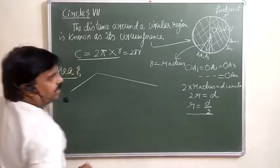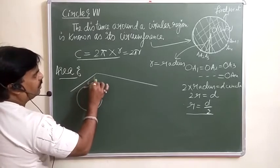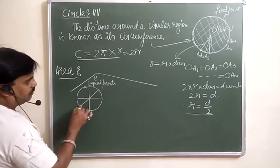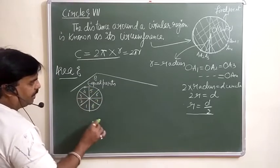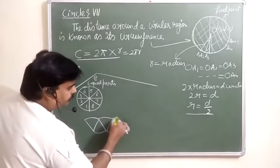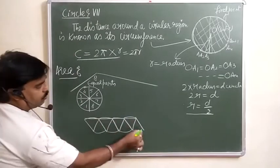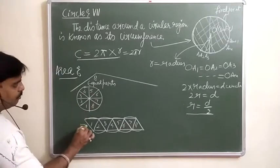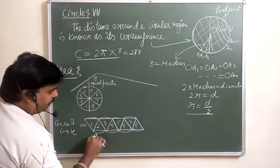There are two cases for finding the area. If we divide a circle into eight equal parts and rearrange them, you will get a shape like a parallelogram. So the area of the parallelogram will be equal to the area of this circle.